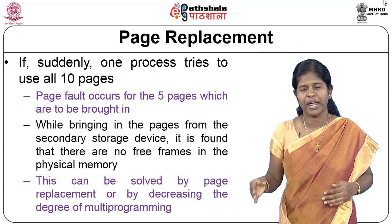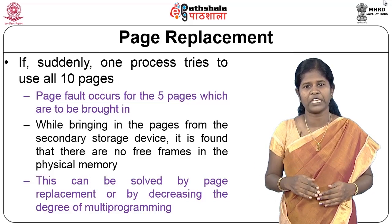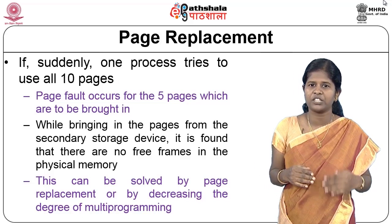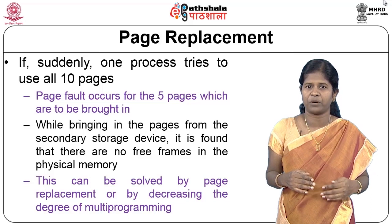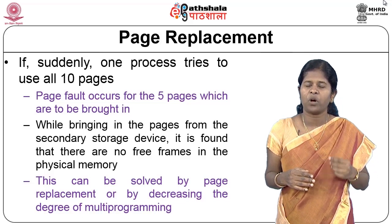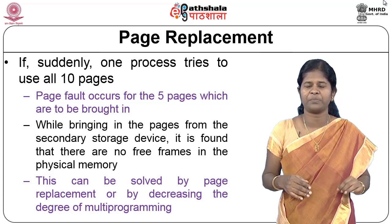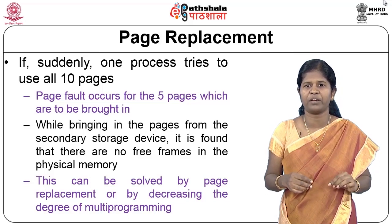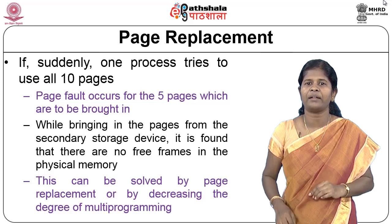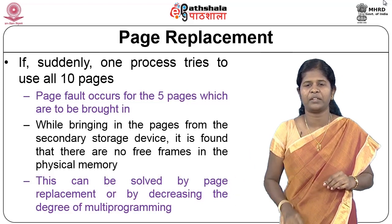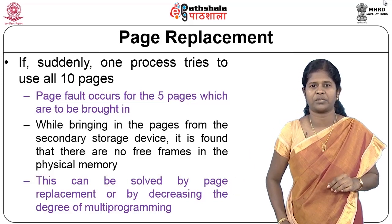The second way to find free frames is page replacement. When you try to bring in a page from secondary storage into main memory, you pick a victim frame from physical memory, move it out, and bring in the required page.